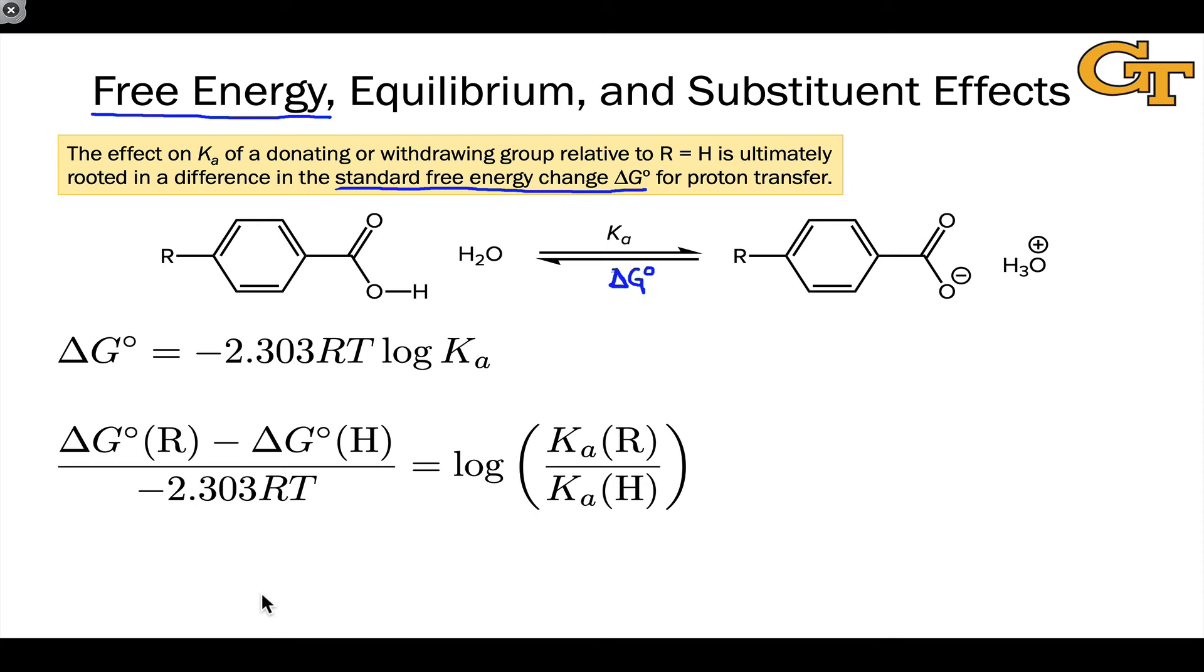So I won't go through that derivation, but it's worth writing out and thinking through on your own. Conceptually, how we think about this logarithm of the ratio of the equilibrium constants term. Well, if R is a donating group and there's a destabilizing effect on the conjugate base, that means that the delta G for the R group will be less negative, more positive, let's say, than delta G for benzoic acid, meaning the Ka will decrease, meaning this logarithm will be negative. On the other hand, if R is a stabilizing group, an electron-withdrawing group that is stabilizing the conjugate base, this ratio will be greater than 1, Ka for R will be greater than Ka for H, and this logarithm will be positive.